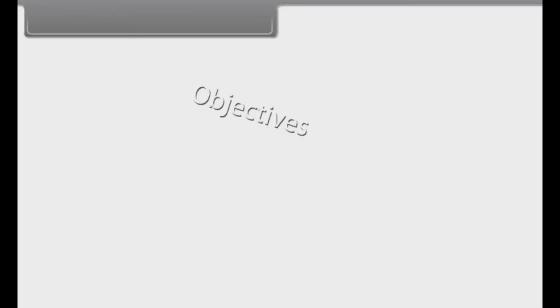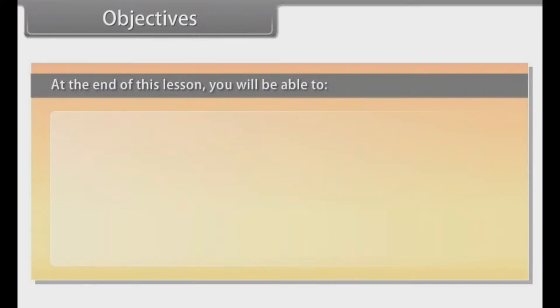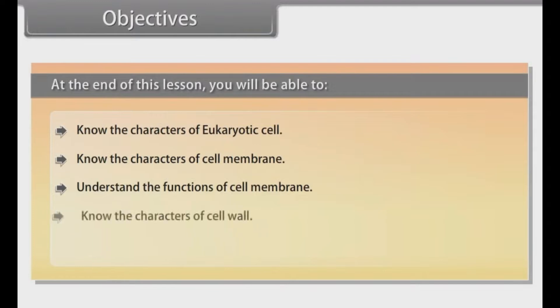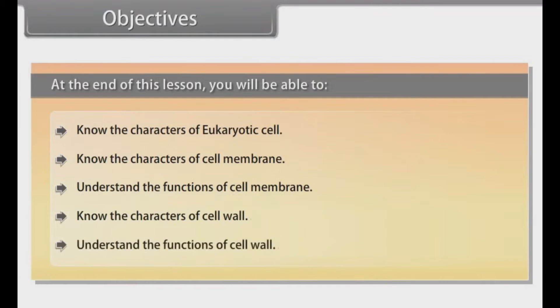Objectives. At the end of this lesson, you will be able to: know the characters of eukaryotic cell, know the characters of cell membrane, understand the functions of cell membrane, know the characters of cell wall, and understand the functions of cell wall.